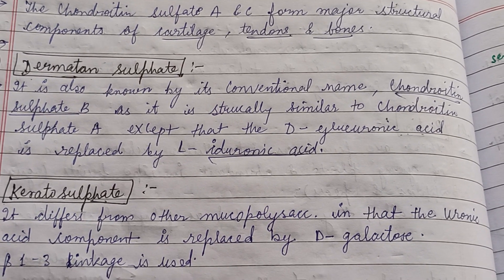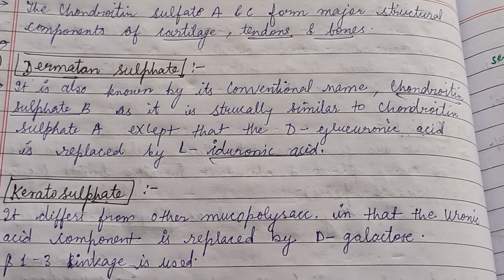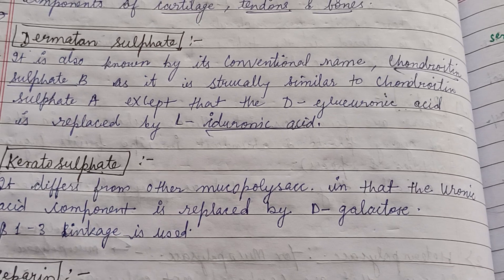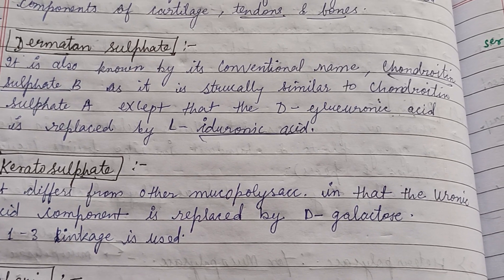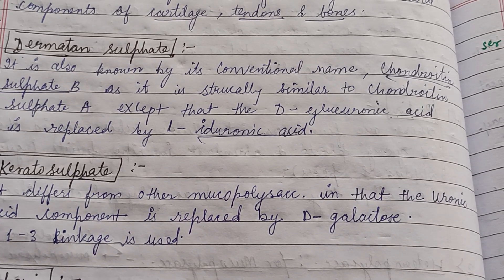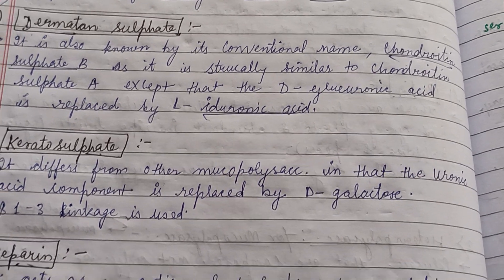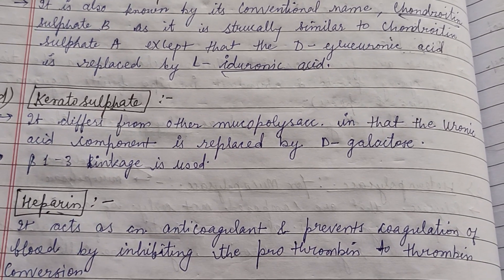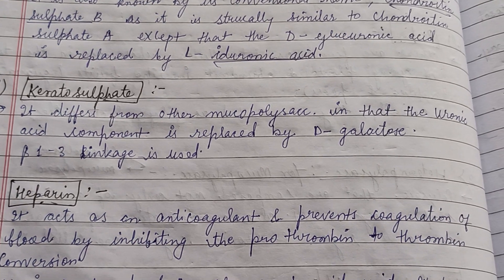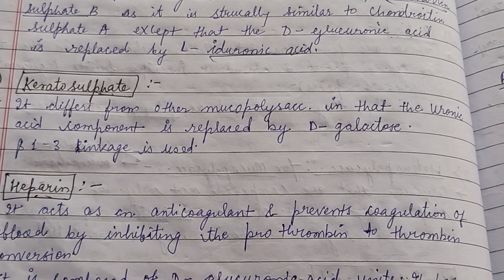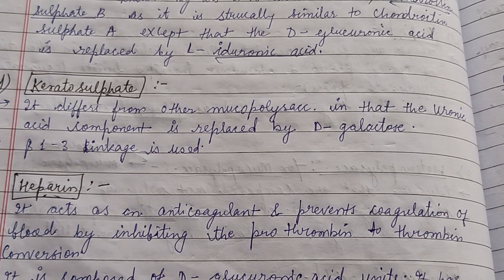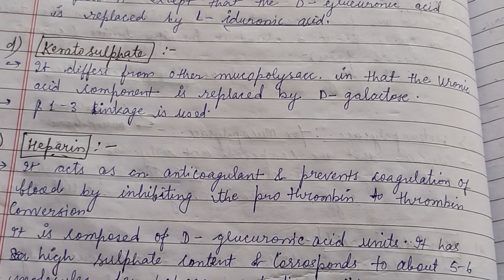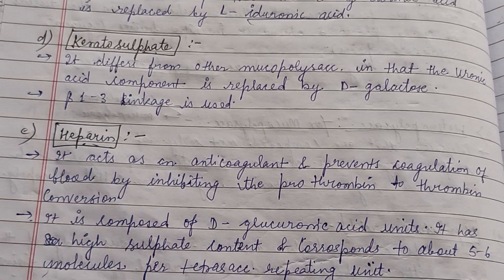Dermatan sulfate is similar to chondroitin, but sulfate A and C are replaced by sulfate B, and uronic acid is replaced by iduronic acid. Keratan sulfate is another mucopolysaccharide in which the uronic acid component is replaced by D-galactose.